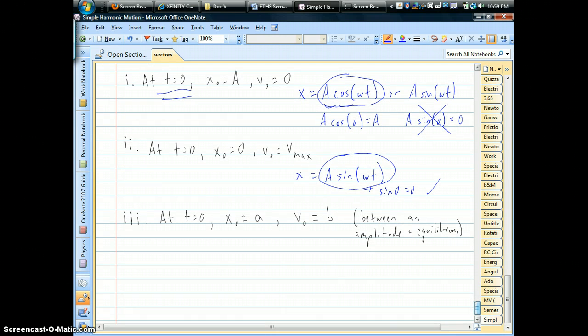Now, unfortunately, that doesn't quite work well if you're in between equilibrium and one of your amplitudes. So what if you do have some non-zero or non-amplitude position and a non-zero initial speed? Well, here, it won't matter if you use sine or cosine as long as you're using that so-called phase angle.